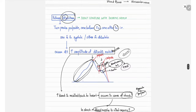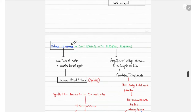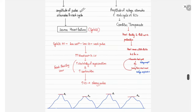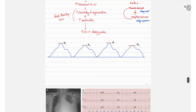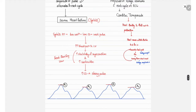The last character is pulsus alternans, in which there is an alternating amplitude of pulse in each cardiac cycle. For example, there is a higher amplitude in the first pulse, a decreased amplitude in the second, higher again in the third, and decreased again in the fourth. It occurs in severe heart failure.